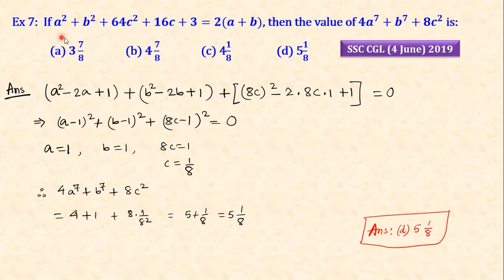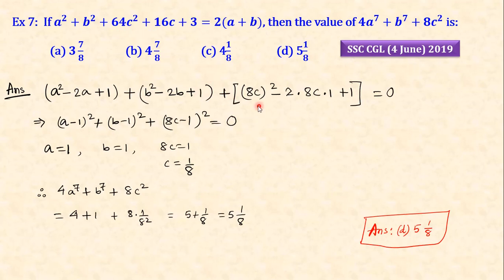If a² plus b² plus 64 equals this, find the value. We expand: 2a minus 2a plus 1 and b² as 2b minus 2b plus 1. The whole square sum equals zero, meaning each individual square is zero.